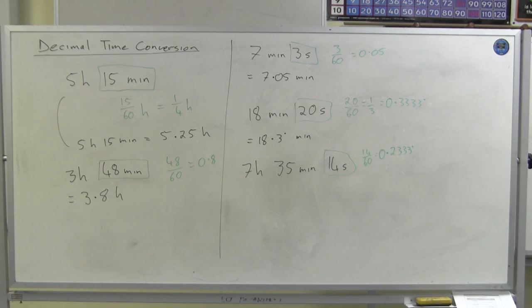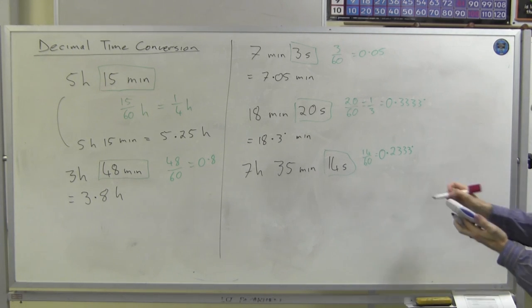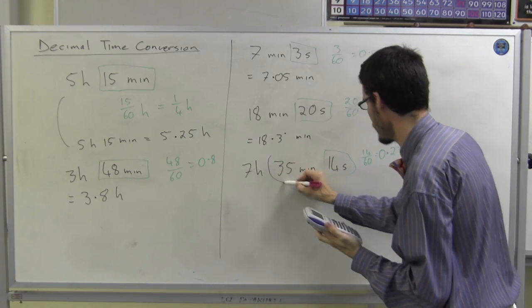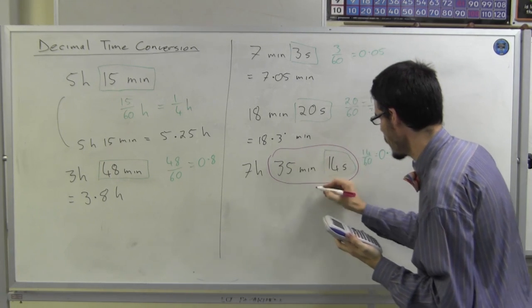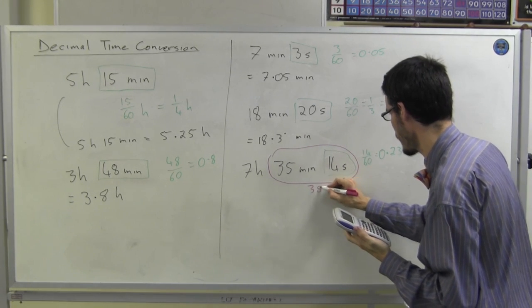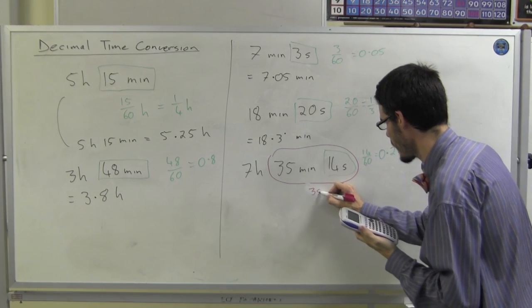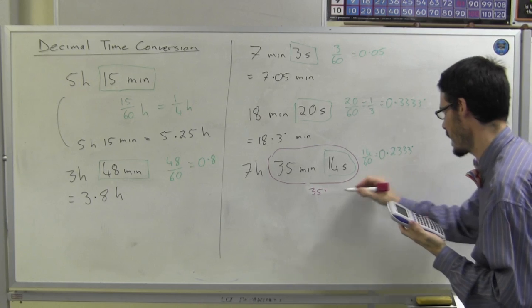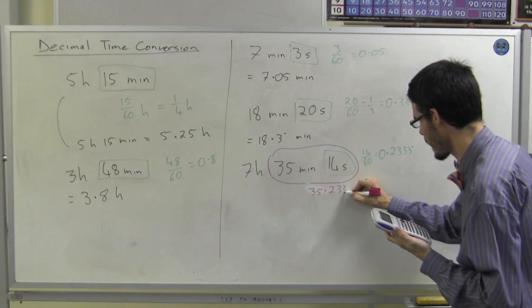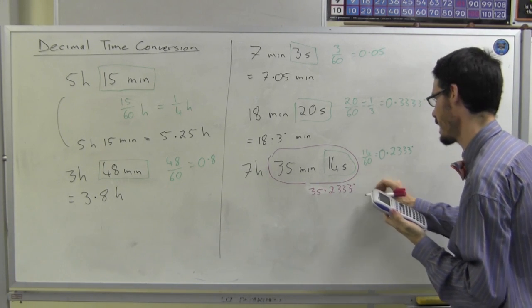Which means this bit here is 35, is 35.2333 recurring minutes.